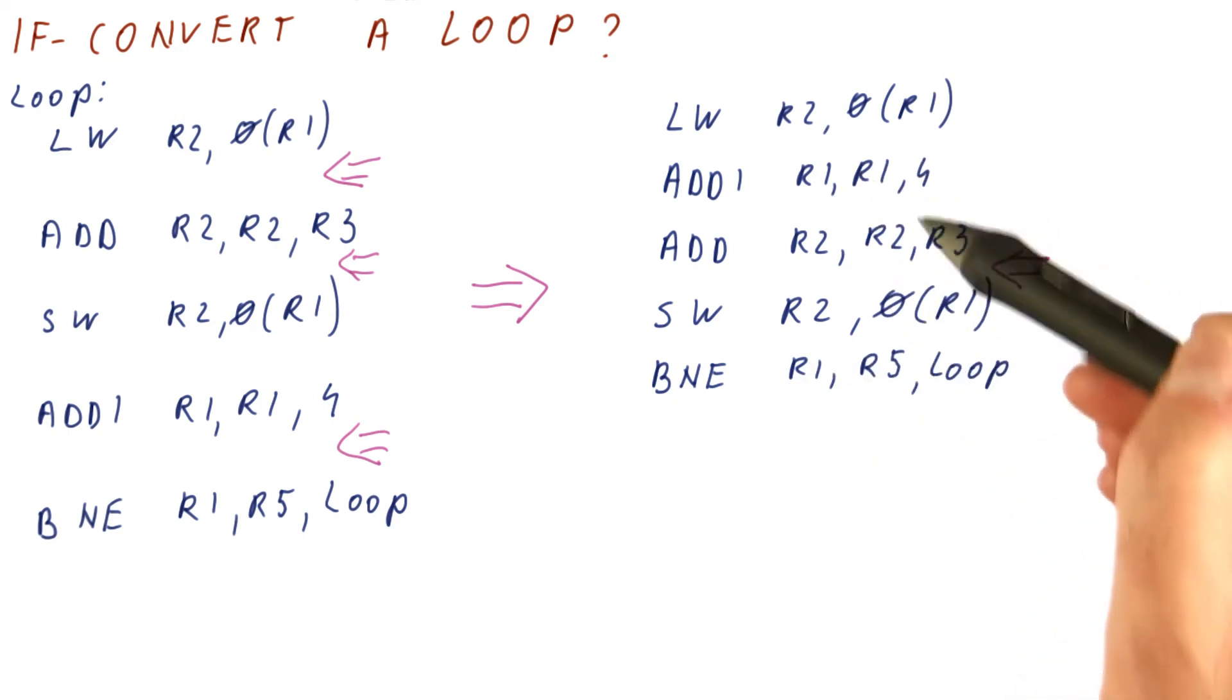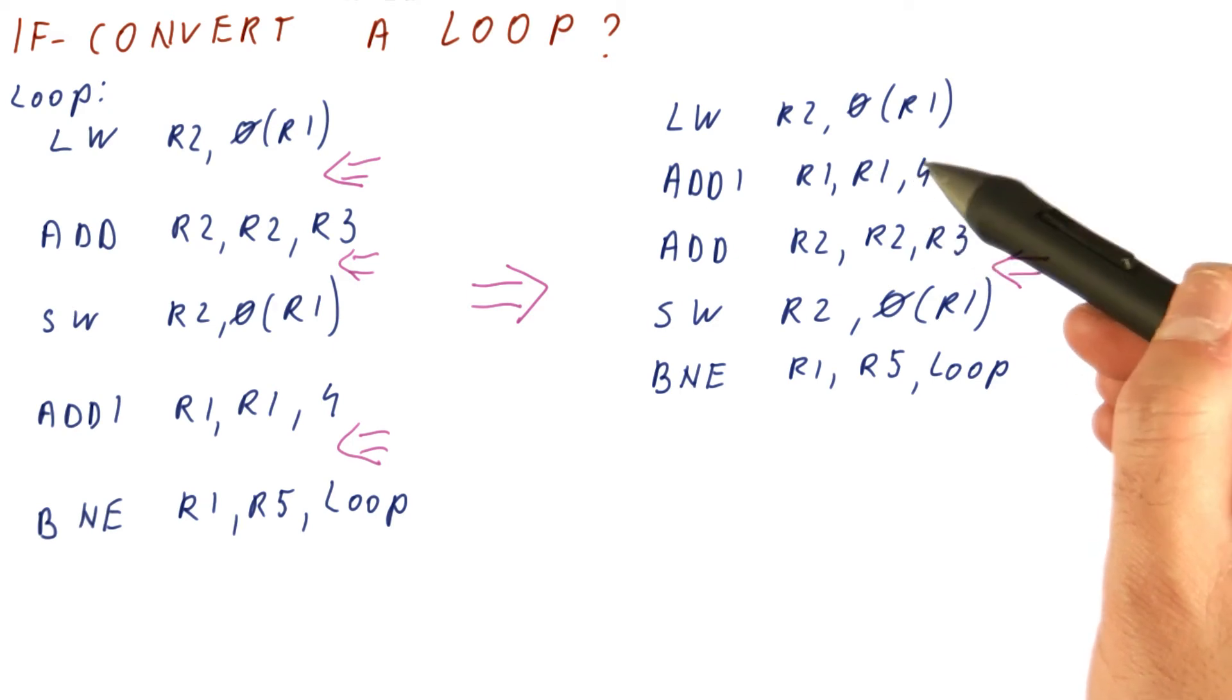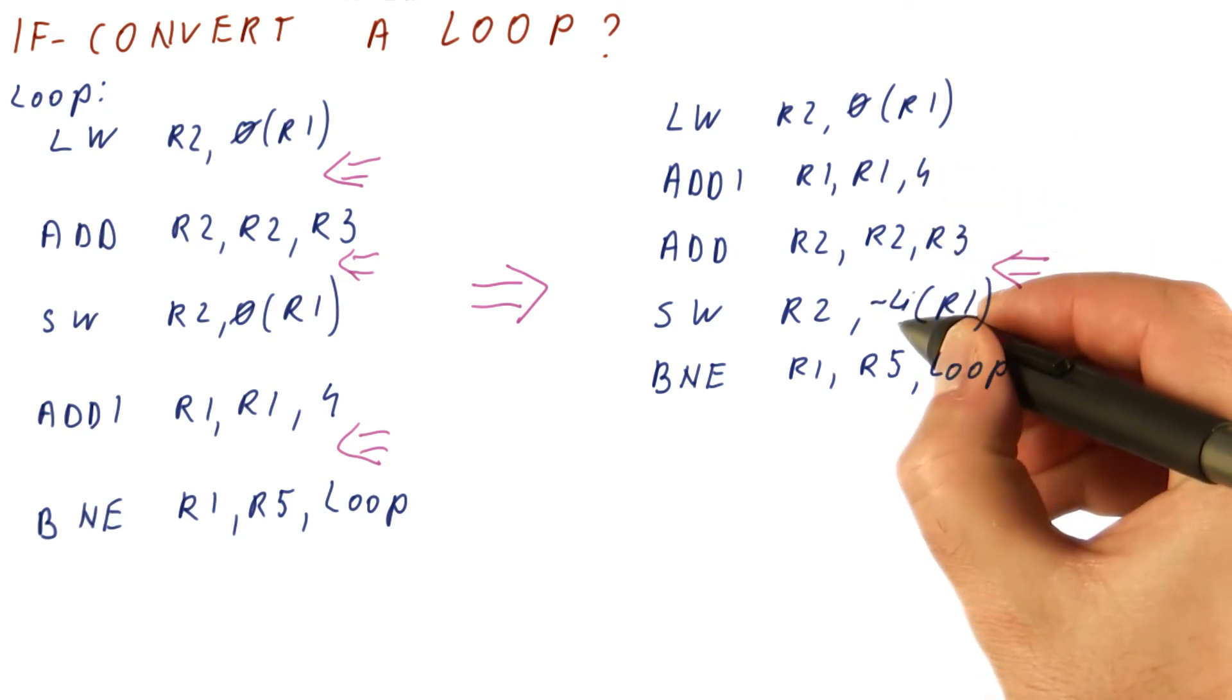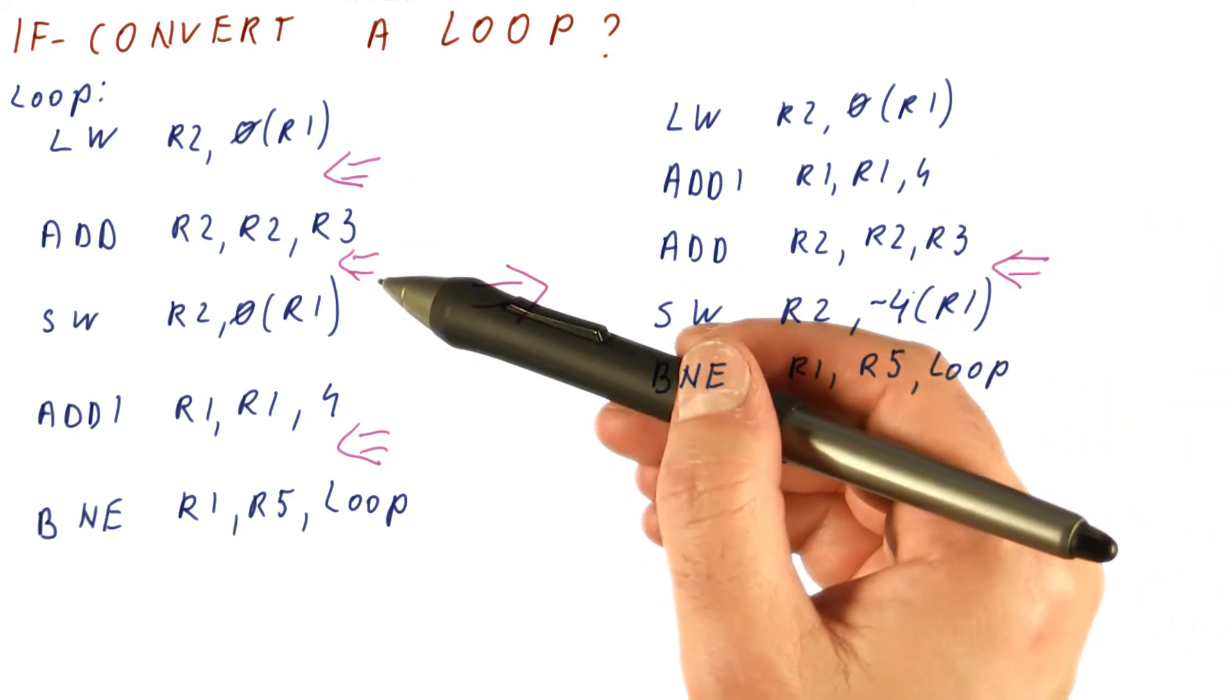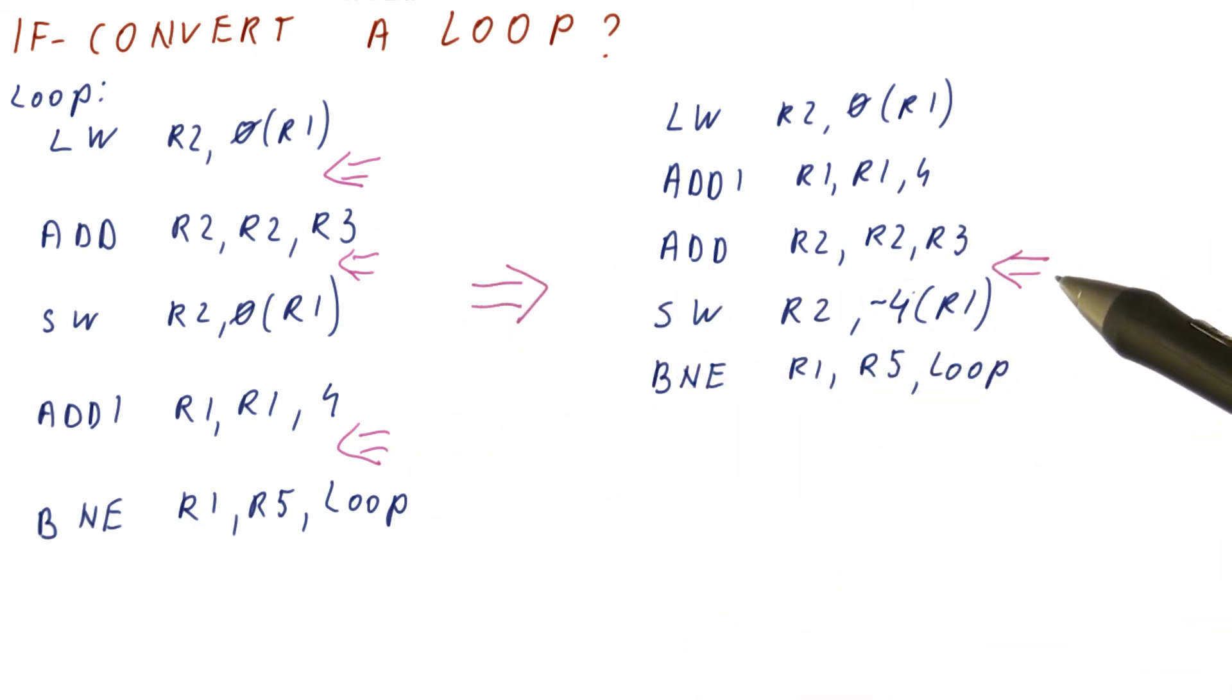And then we had to change this store, if you remember, because the add of a constant has moved here, so that it uses a minus 4 offset to compensate for this. So we managed to eliminate two of these stall cycles, but one still remains.